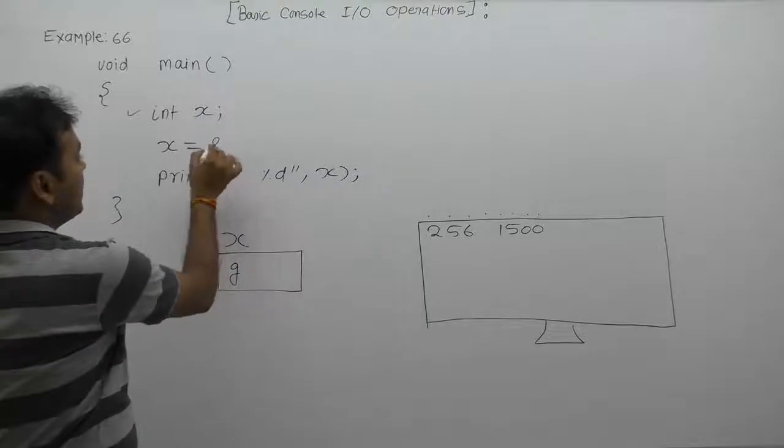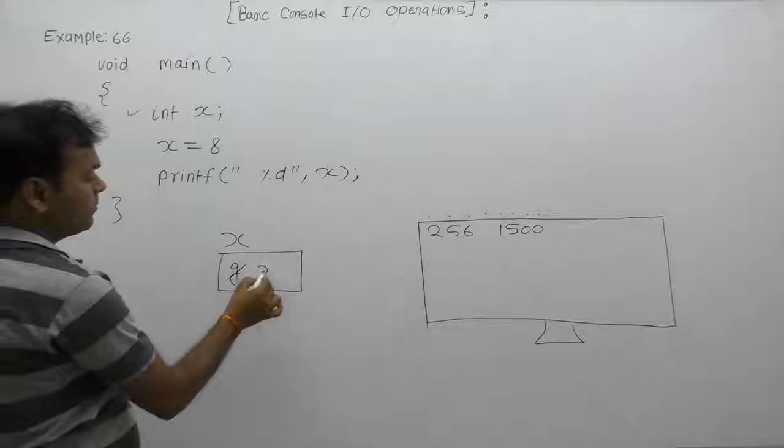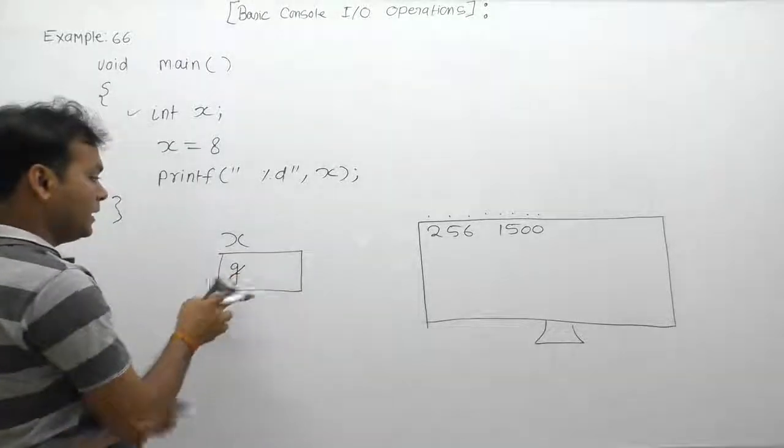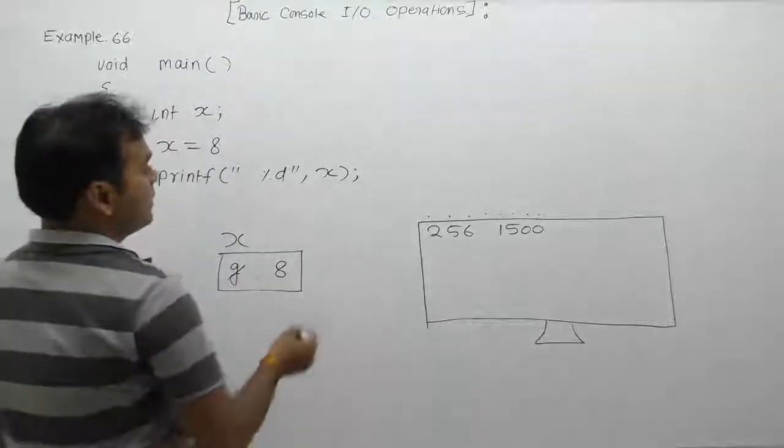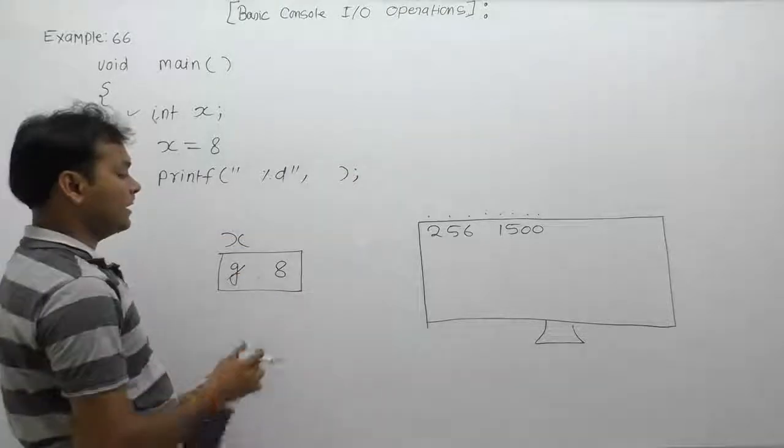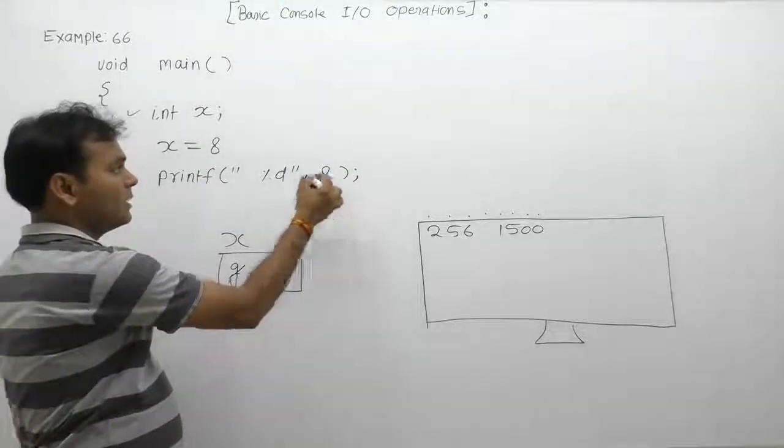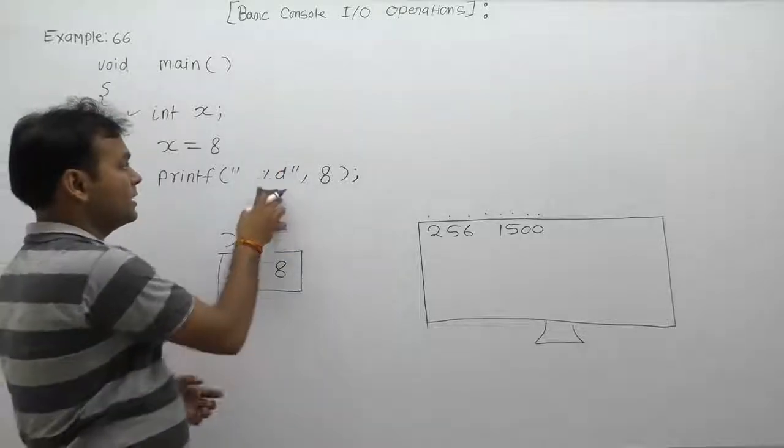Now 8 is assigned to the variable x. The value of x becomes 8. Next, according to the next printf statement, in place of x we are replacing with the current value of x which is 8. In place of the format specifier %d, we are replacing with the corresponding argument value 8.